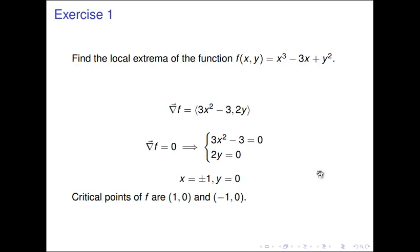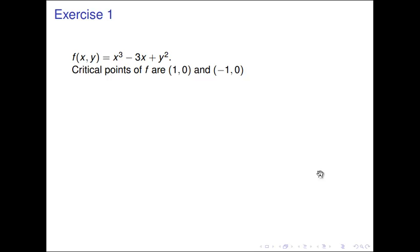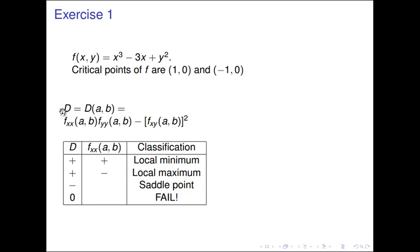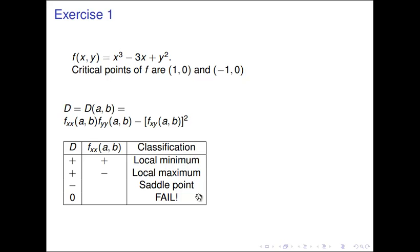Next we need to test whether these critical points are local maxes, local mins, saddle points, or neither. To do that we use the second derivative test, which requires us to build the number d from the second order partial derivatives: fxx, fyy, and fxy. By Clairaut's theorem fxy and fyx are the same, so we just use one of them squared. If d is positive we get local mins or maxes; if negative, a saddle point; and if d equals 0, the test tells us nothing.